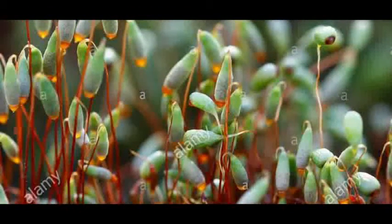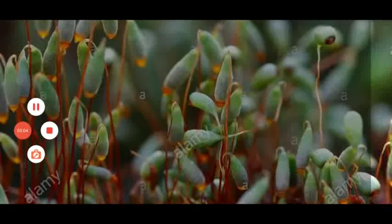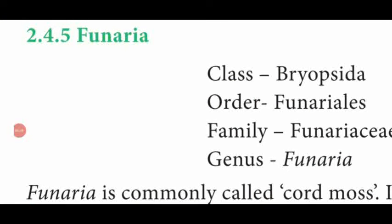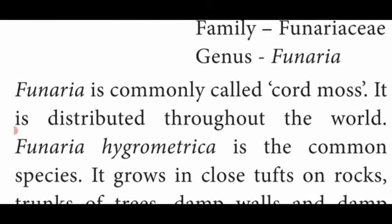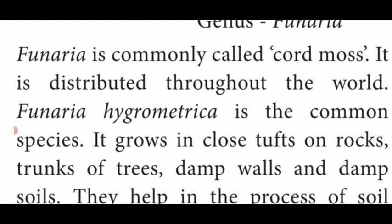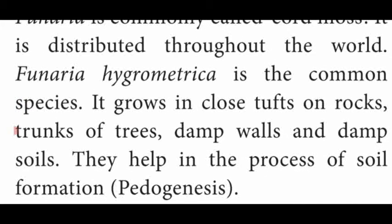Now we are going to see the life cycle of Funaria. Funaria belongs to class Bryopsida, order Funariales, family Funariaceae, genus Funaria. Funaria is commonly known as cord moss and is distributed all over the world. Funaria hygrometrica is the common species, which grows in close tufts — meaning bushy, cluster-like appearances — on rocks, trunks of trees (bark), damp walls, and moist soils.